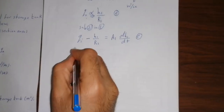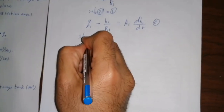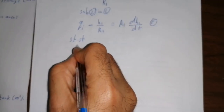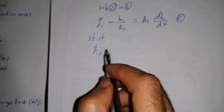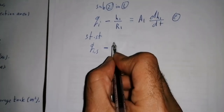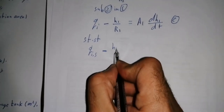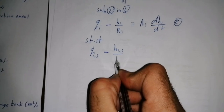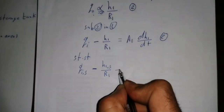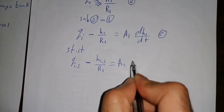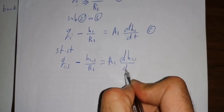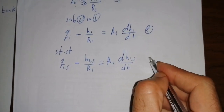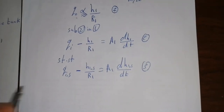At initial steady state, the equation becomes: QI_s minus H1_s / R1 equals A1 * dH1_s/dt, which is equation 3. This equation represents the steady-state initial condition. Here the subscript S refers to the steady-state initial condition.